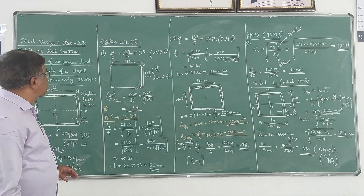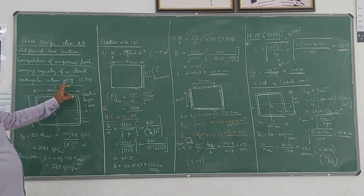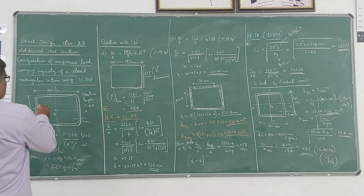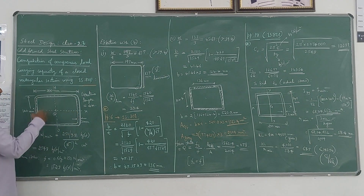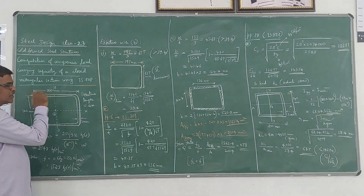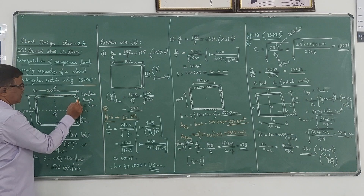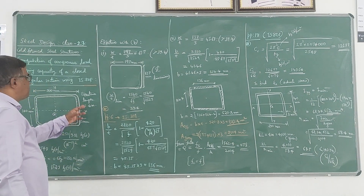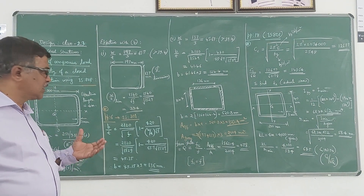In this class, we will discuss a problem on computation of compressive load carrying capacity of a closed rectangular section using IS 8.1. This is a tubular structure — a rectangular section with closed walls. The thickness of this section is 3mm, width in one direction is 200mm, and overall width in the other direction is 140mm. These are the centerline dimensions of the section. If this section is used as a compressive member over an effective span of 4 meters, and the yield stress value of the material is 250 Newton per mm square, what is the compressive load carrying capacity of this section?